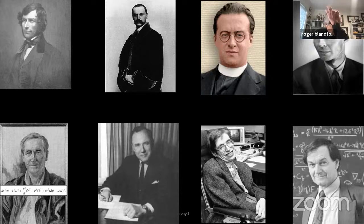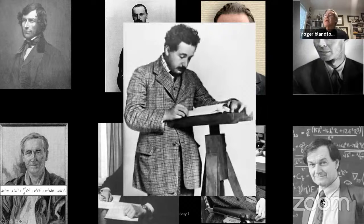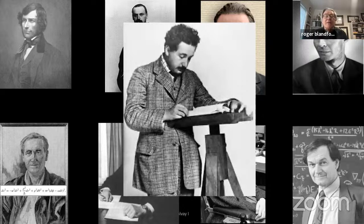Stephen Hawking was one of a group of then very young researchers in general relativity who completely transformed the way of thinking about strong-field relativity, black holes, and cosmology. Then there is Roger Penrose, whose contribution I'll come to in a moment. Towering over all of these is Albert Einstein, whose ten-year quest from special relativity to general relativity was a wonderful intellectual adventure with many wrong turns and misconceptions, but he got there in the end.